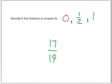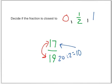What about the fraction 17 nineteenth? Is that closest to 0, a half, or 1? Well, I'm thinking that 19 is almost 20, and 20 divided by 2 is 10 — 10 would be halfway. Well, 17 is way past halfway. In fact, 17 and 19 are really close, so I think 17 nineteenth is closest to 1.